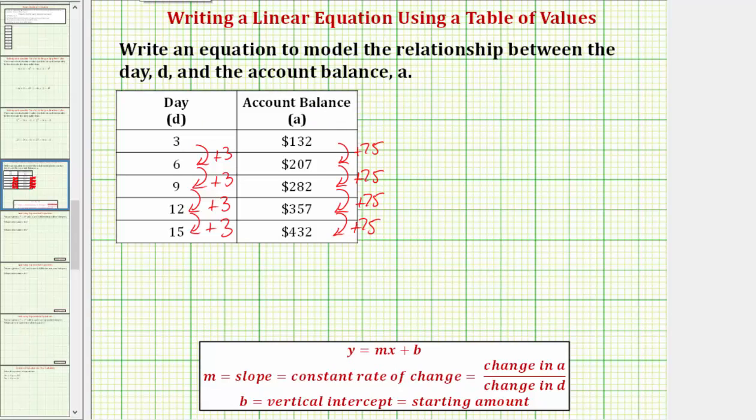Which means the equation we're going to find is going to be in the form of A, the account balance, equals M, which is the slope or the constant rate of change, times D instead of X.